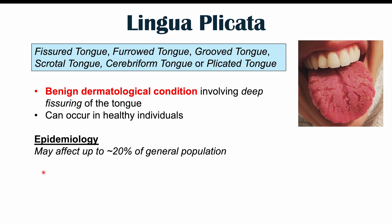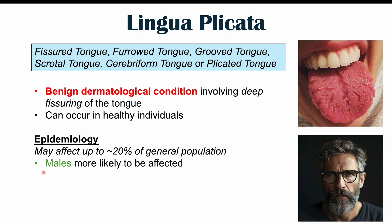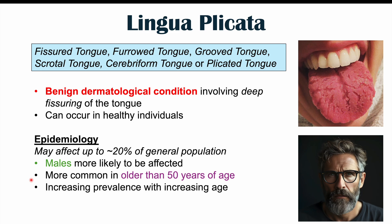There are particular factors that seem to increase the likelihood of having this condition. Some of these include being of the male biological sex, as males are more likely to be affected than females. It's also more common in older patients, particularly over the age of 50, with increasing prevalence with increasing age. There are also potential causes and associated medical conditions that make lingua plicata more likely.